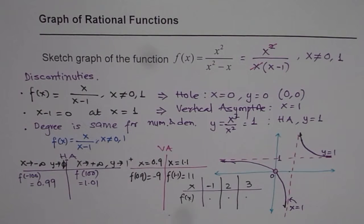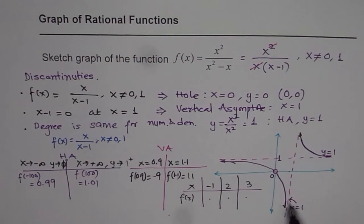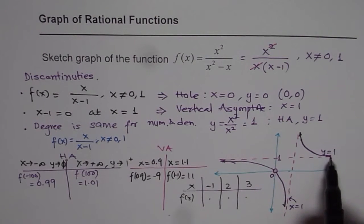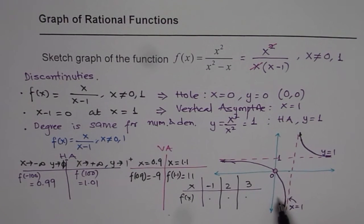In summary, the steps to graph a rational function are: simplify and write it in factored form to identify discontinuities; analyze each discontinuity — it will lead to an asymptote or a hole; if a hole, find both x and y coordinates; if a vertical asymptote, find behavior approaching from left and right; if a horizontal asymptote, find behavior as x approaches negative and positive infinity; then plot accurately. I hope that helps — thank you and all the best.